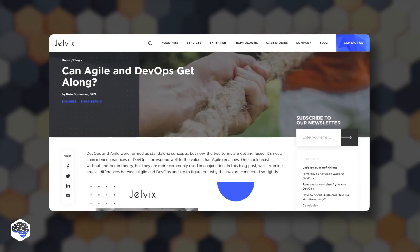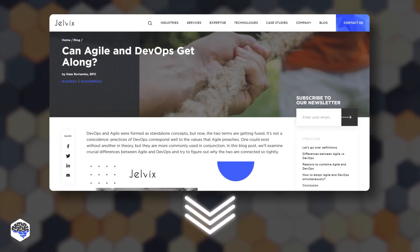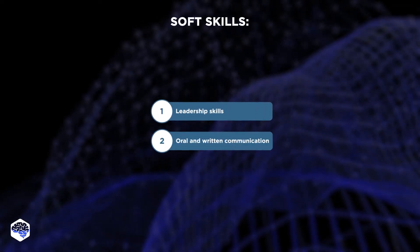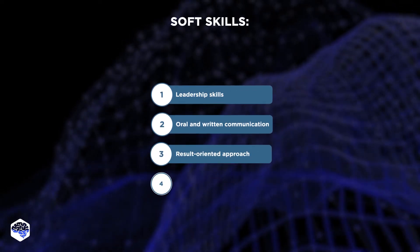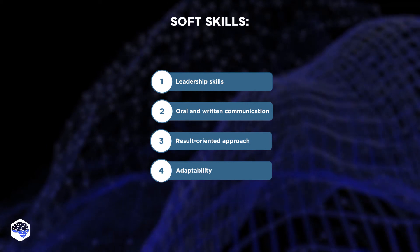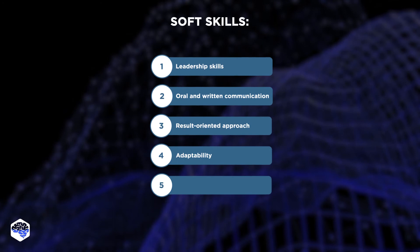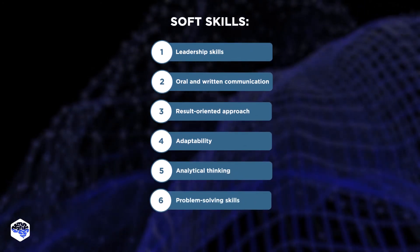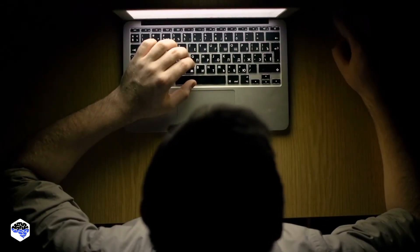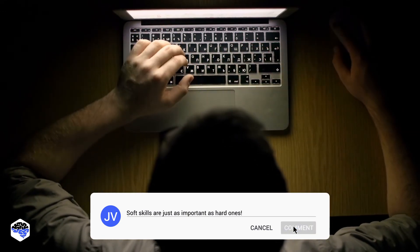If you want to find out more about DevOps and Agile, check the guide in the description box. Let's now move on to Solutions Architect's soft skills: Leadership; oral and written communication to clearly present the solutions they have designed; a result-oriented approach; adaptability, as any other profession in the tech industry must be able to adapt to changes; and analytical thinking and problem-solving skills to be creative when tackling business issues. Do you think these soft skills are absolutely necessary for any management position? Share your thoughts in the comments.